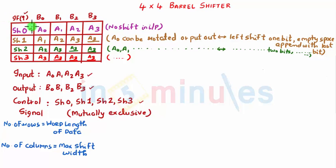If Shift 0 is high there is no shift, so my A0 will become B0, my A1 will become B1, A2 will become B2, and A3 will become B3, so no shift in input.